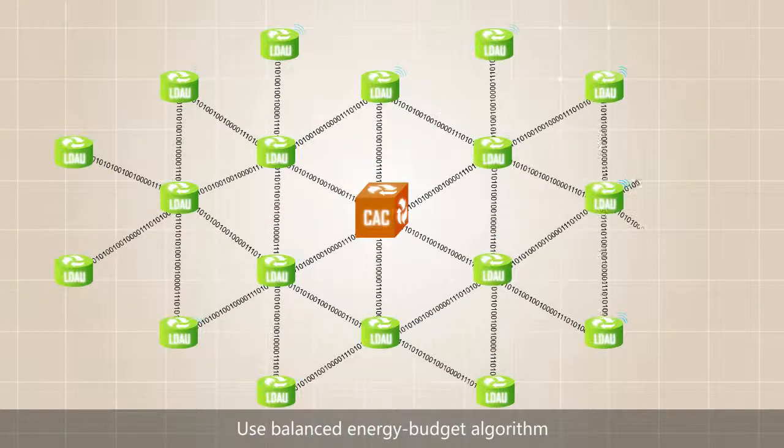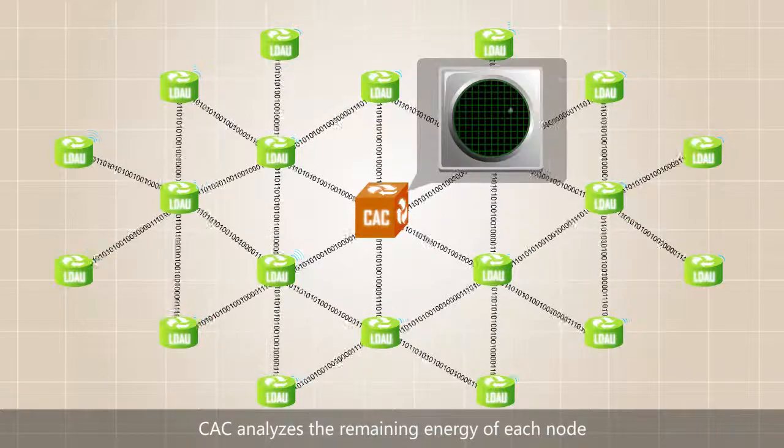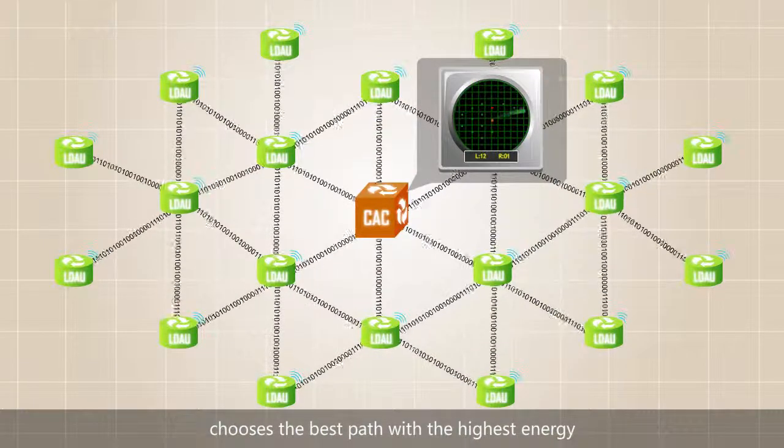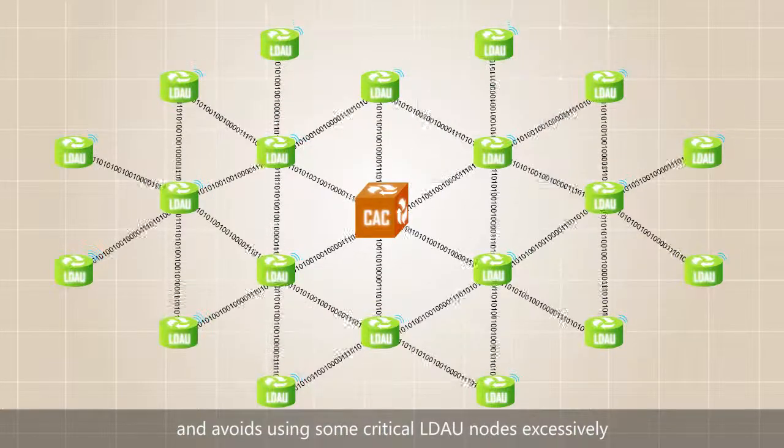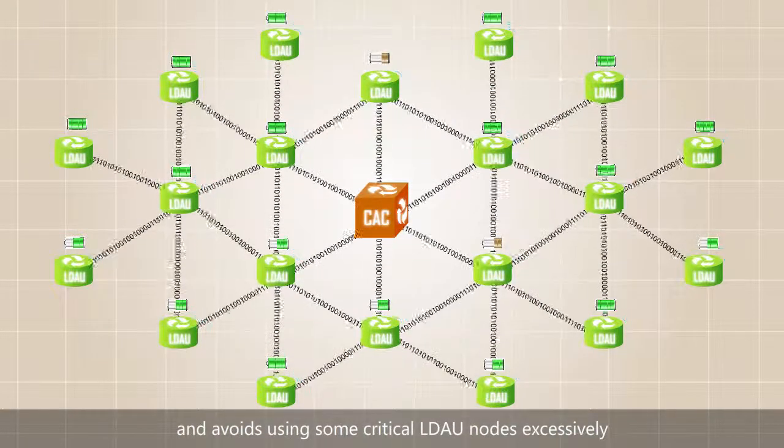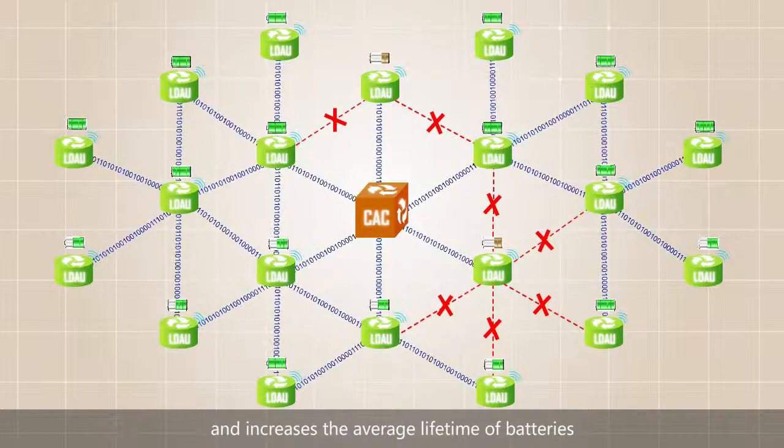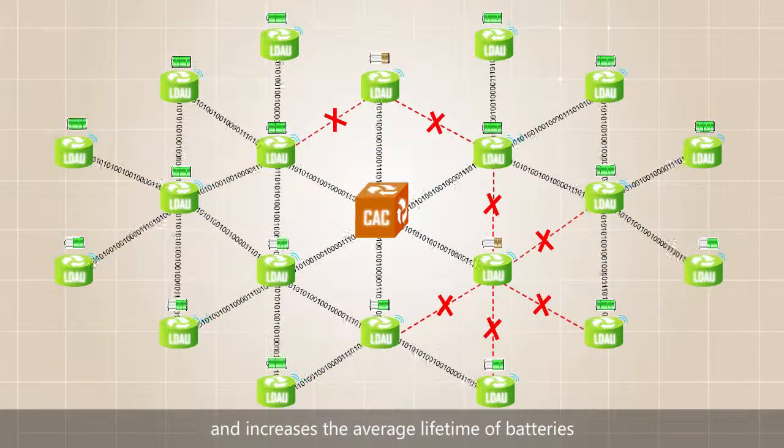Use balanced energy budget algorithm. CAC analyzes the remaining energy of each node, chooses the best path with the highest energy and avoids using some critical LDAU nodes excessively. This enables a balance in power consumption and increases the average lifetime of batteries.